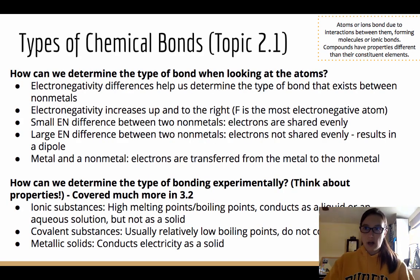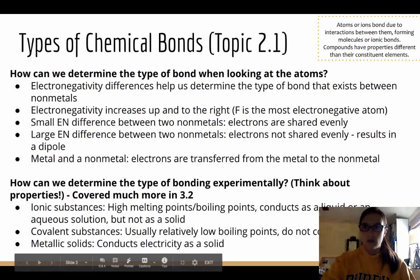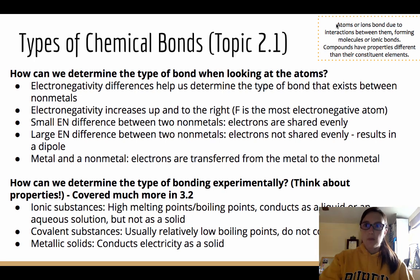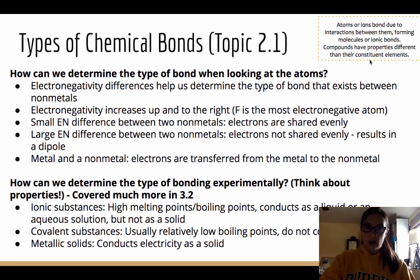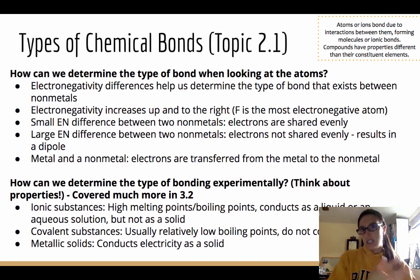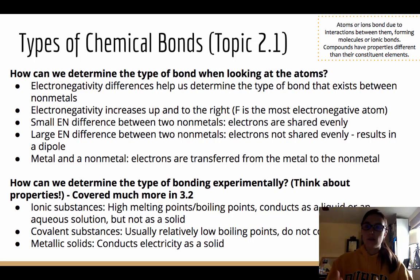Topic 2.1 looks at types of chemical bonds. Atoms or ions bond due to interactions between them. Make sure you can distinguish between the two: atoms form molecules, ions form ionic bonds. Use correct terminology when discussing molecules or ionic substances. Also remember that in a chemical reaction, you take reactants and form a product that has different properties than what you started with.